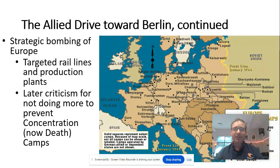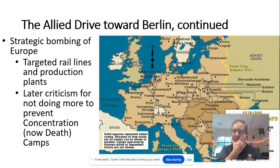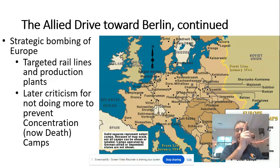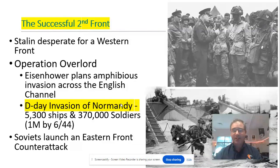They then shifted into strategic bombing of Europe, targeting rail lines and production plants, trying to soften Germany up for a potential invasion. Later, the United States and Great Britain would be criticized for not doing enough to prevent the concentration camps — a lot of the rail lines they targeted did end up going into camps. This delayed invasion not only hurt the Soviets because the Nazis kept attacking on the eastern front, but all of these death camps and concentration camps remained operational, killing far more Jewish people than an immediate opening of the second front would have.